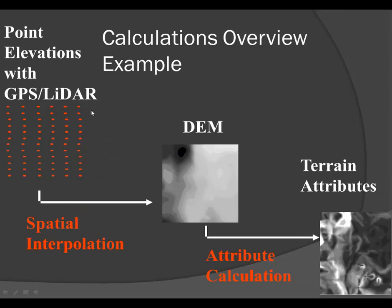Here's a simple example of our process. We take the point cloud and create the DEM — the DNR does this. Then we do the preprocessing: filling sinks and pits, filtering, and conditioning. Then we calculate the terrain attributes.